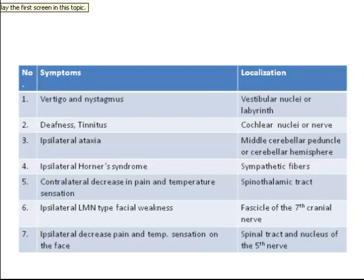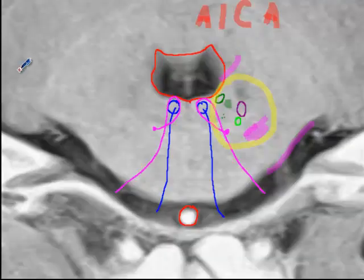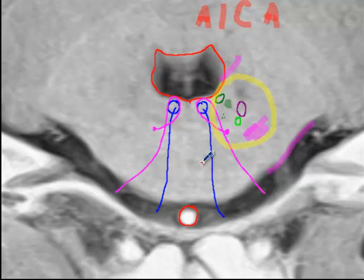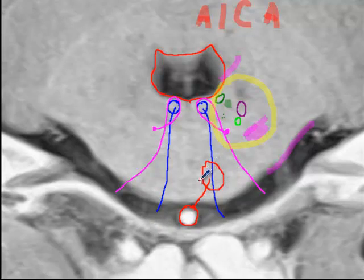The stroke may only involve part of these structures. Sometimes these strokes are also associated with involvement of the perforating branches of the basilar artery. If you think of the perforating branches going here, this area contains the corticospinal tracts, so in that instance an AICA stroke can also be associated with contralateral weakness.